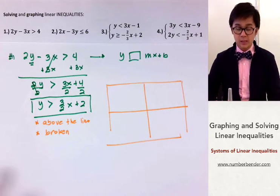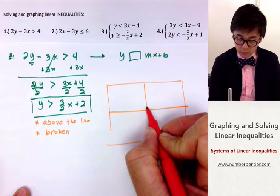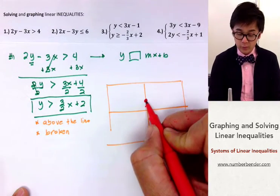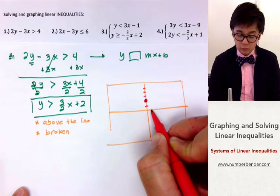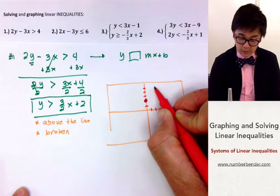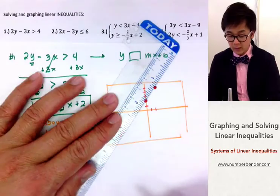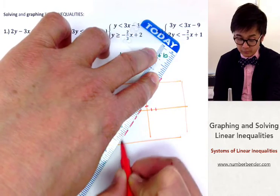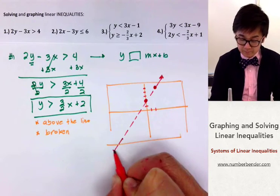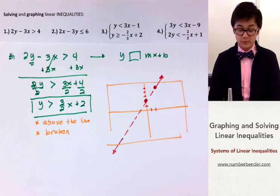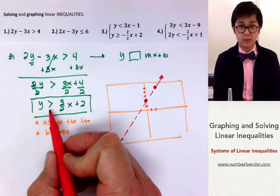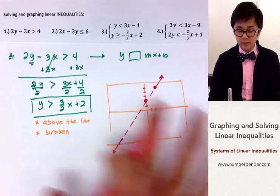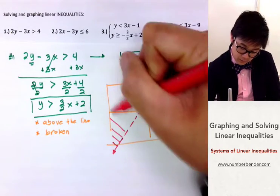We start with the y-intercept which is 2. From 0, positive 2, this is our first point. The slope, which is 3 over 2, helps us find the second point — we go up 3 units and 2 units across. We connect the dots using a broken line because it's a greater than symbol, not greater than or equal to. Then we shade the region above the line because it's greater than.